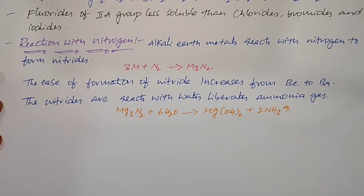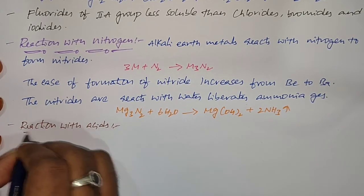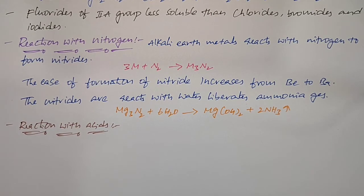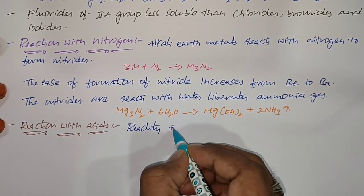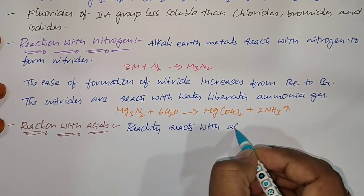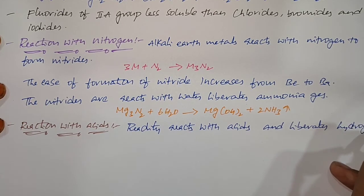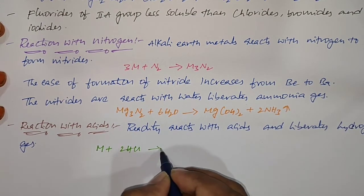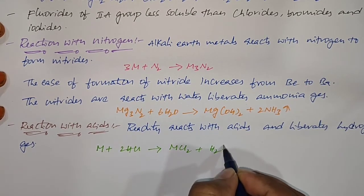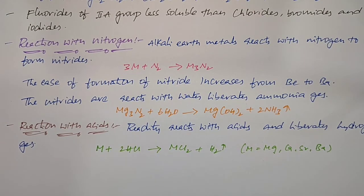Next is reaction with acids. When 2A group elements react readily with acids, they liberate hydrogen gas. The corresponding equation is: M + 2HCl → MCl2 + H2, where M can be magnesium, calcium, strontium, or barium.